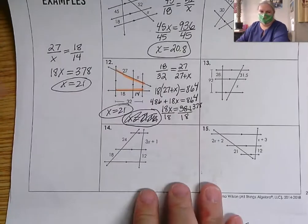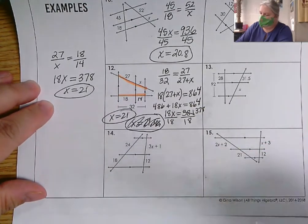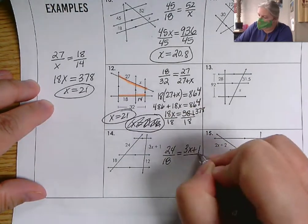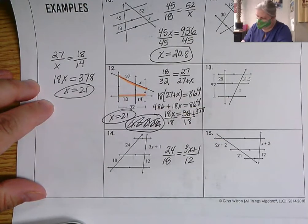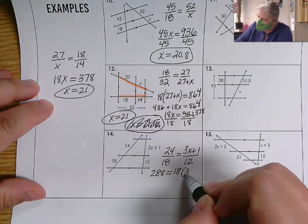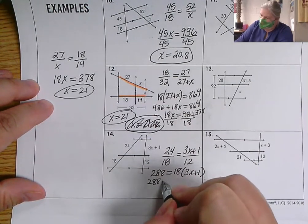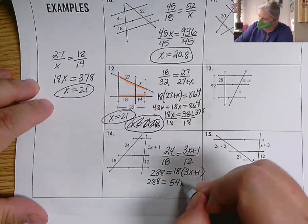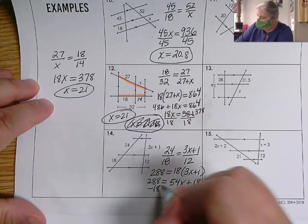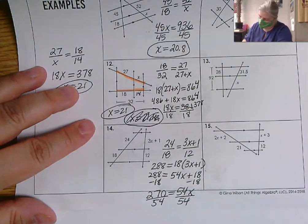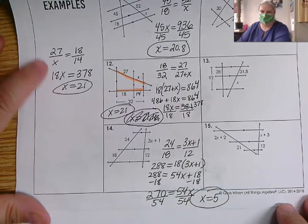Number 14: 24 over 18 equals 3X plus 1 over 12. Cross multiplying: 12 times 24 gives 288, equals 18 times the quantity 3X plus 1 — don't forget parentheses. Working through the algebra gives 270 equals 54X, so X equals 5.